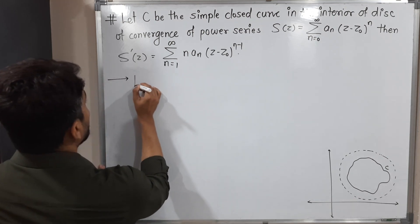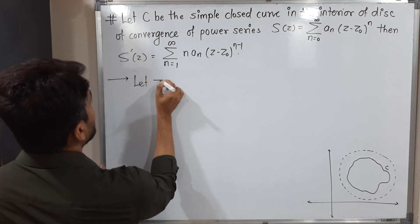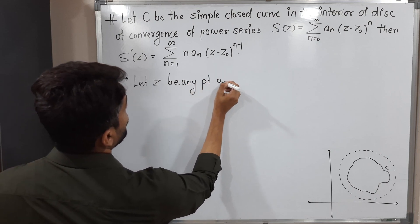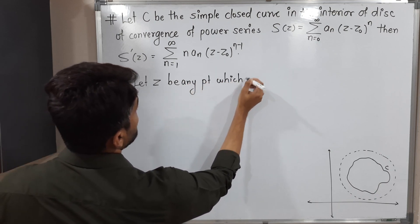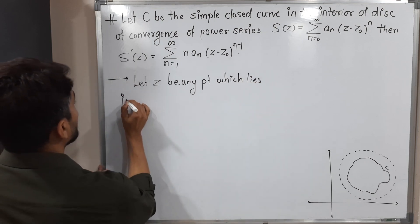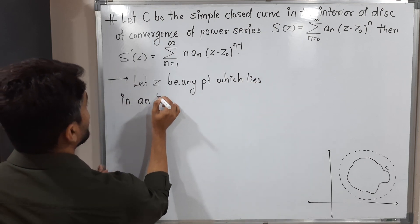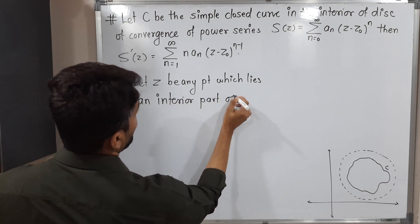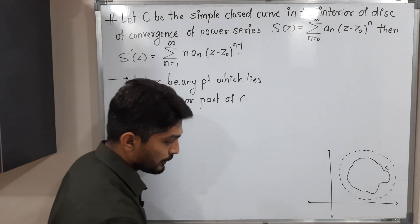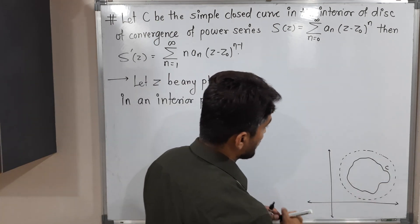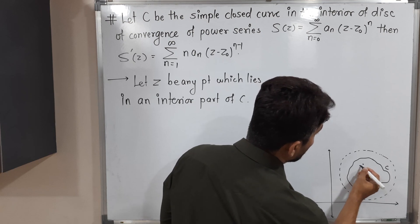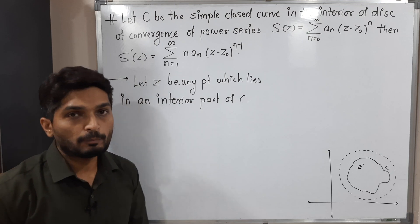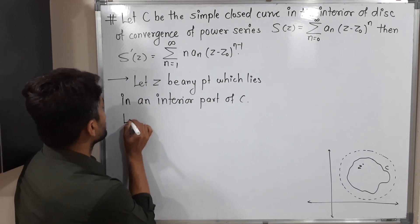Let z be any point which lies in the interior part of C. Since C is a closed curve it divides the region into two parts — interior and exterior — so we take one point z in the interior. We are also going to define one more function as part of our construction.